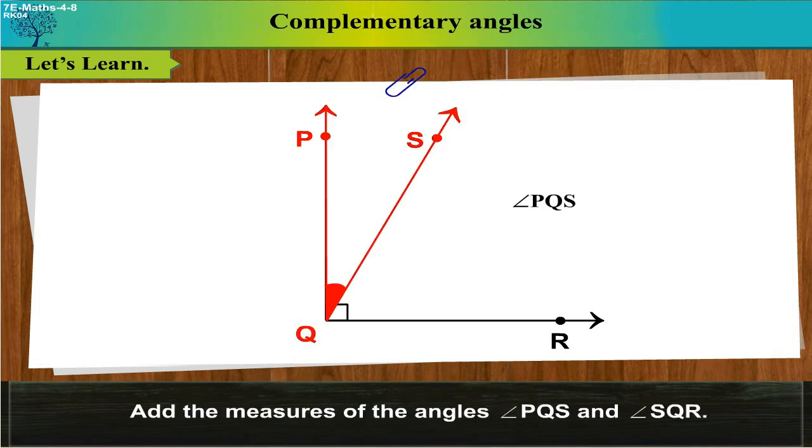Add the measures of the angles Angle PQS and Angle SQR. What will be the sum of their measures?